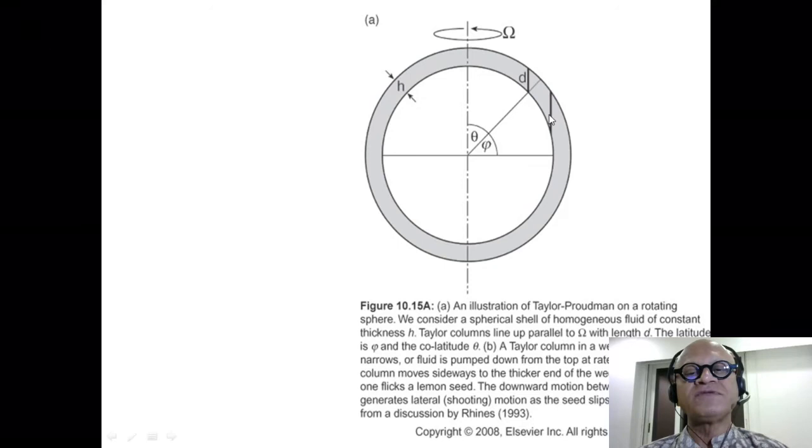You have the height D which changes to this new height if it moves south, or if it moves from south to north or here to there, it will compress. So H is the depth of this water column in which the Taylor column is happening. We're still not talking about the topography. Here is the latitude and the co-latitude φ and θ.